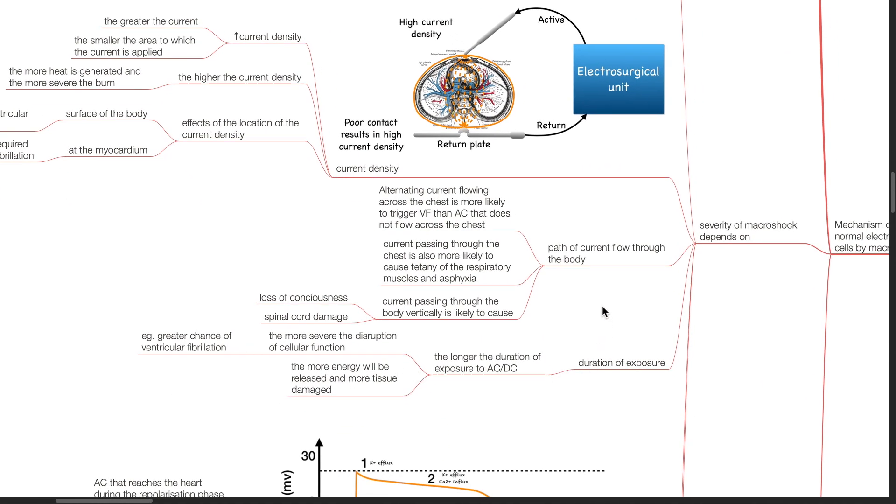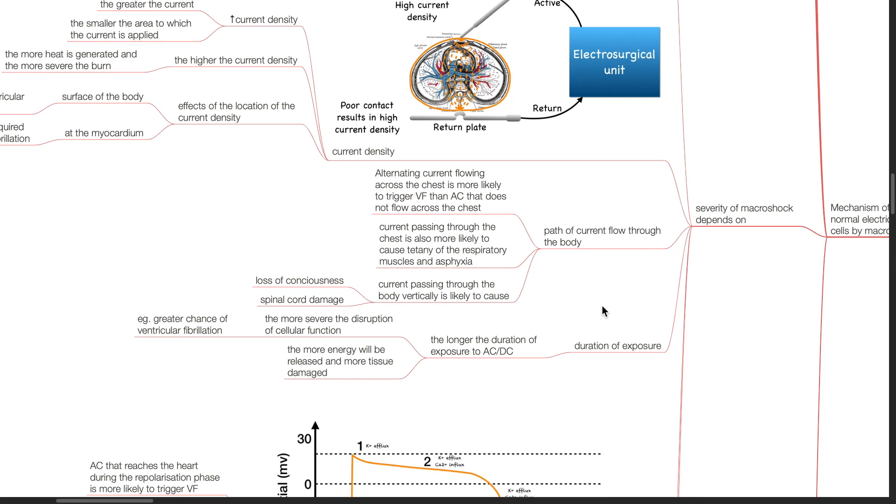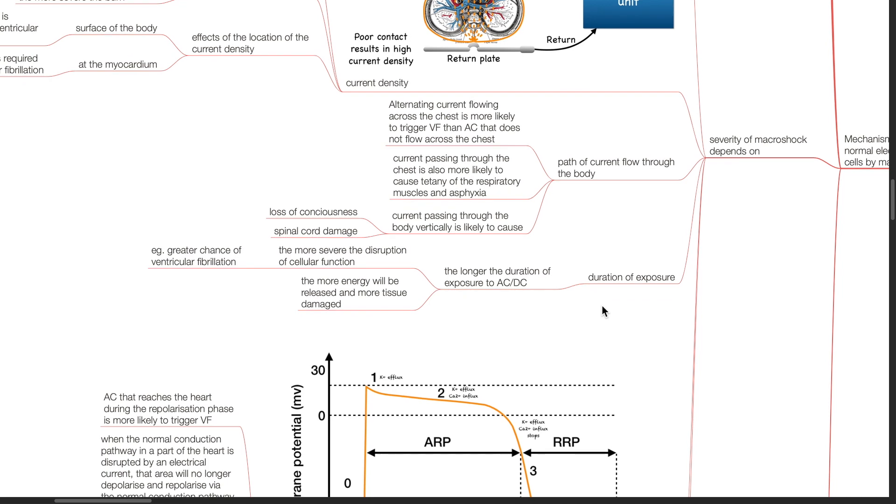Path of current flow through the body. AC flowing across the chest is more likely to trigger VF than AC that does not flow across the chest. Current passing through the chest is also more likely to cause tetany of the respiratory muscles and asphyxia. Current passing through the body vertically is likely to cause loss of consciousness. The longer the duration of exposure to AC or DC, the more severe the disruption of cellular function and the greater the chance of ventricular fibrillation, and the more energy will be released and the more tissue is damaged.